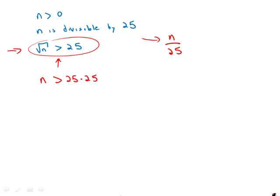And now to get n over 25, what we have to do is divide by 25. So that cancels the 25 there, and we get that n over 25 has to be greater than 25.